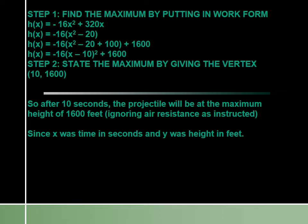Now we're going to complete the square. Half of 20 is 10, and 10 squared is 100. Remember, if we're adding 100 inside the parentheses, we're actually adding 100 times negative 16, which means we're subtracting 1600. So we have to add 1600 on the outside. Now we have our perfect square: negative 16 times x minus 10 squared, plus 1600.